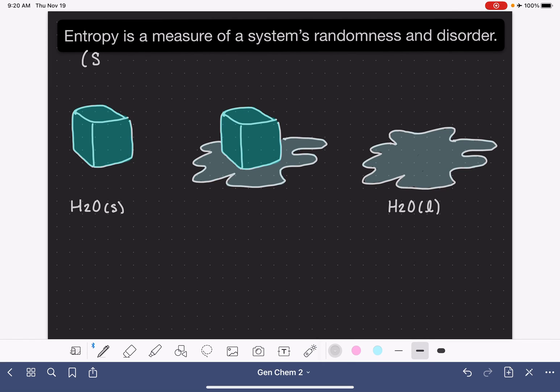Entropy, which is given the symbol capital S, is a measure of a system's randomness and disorder.